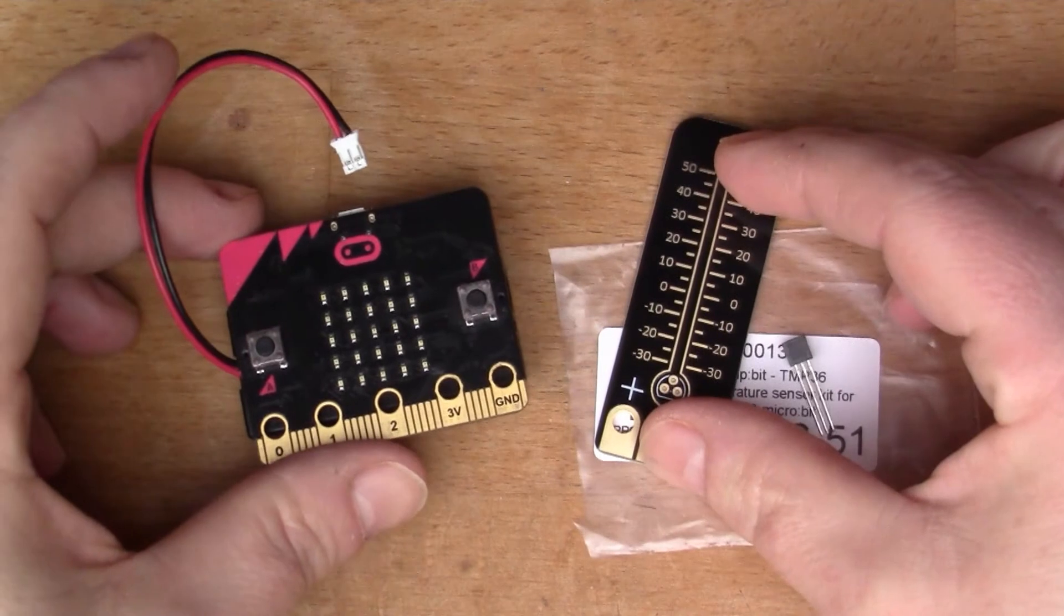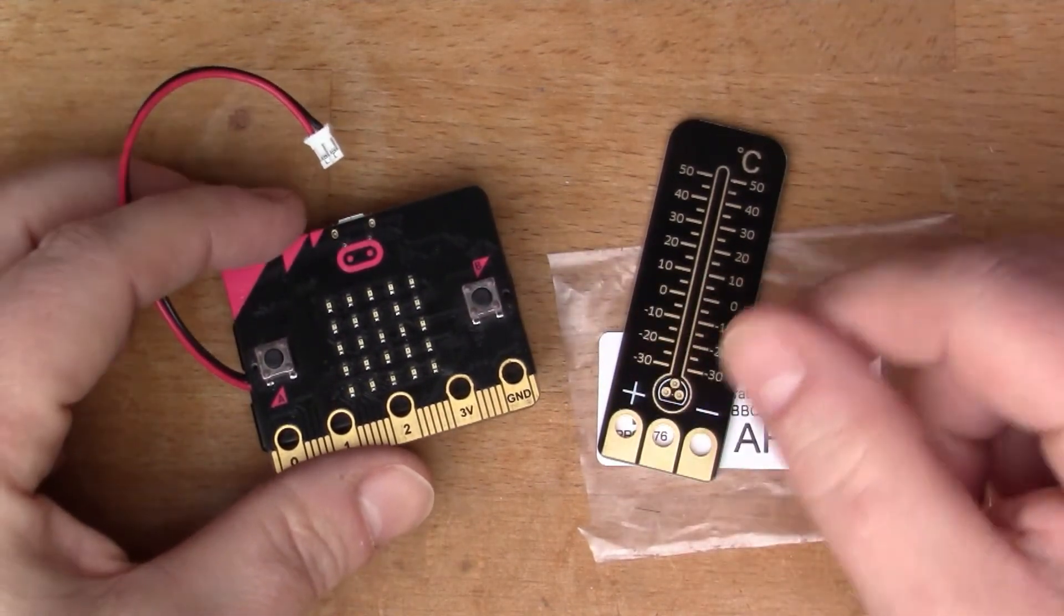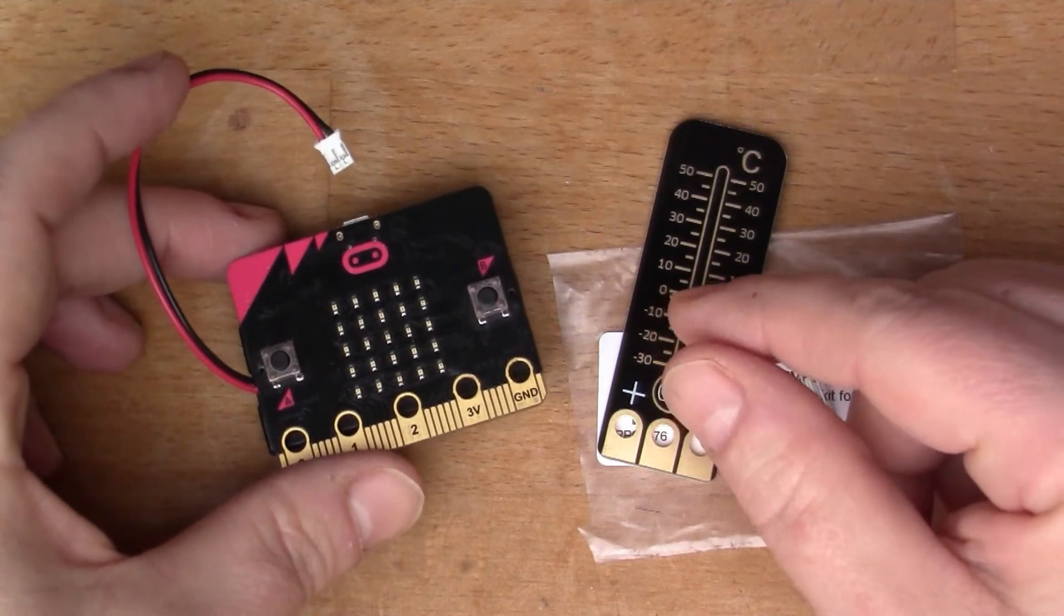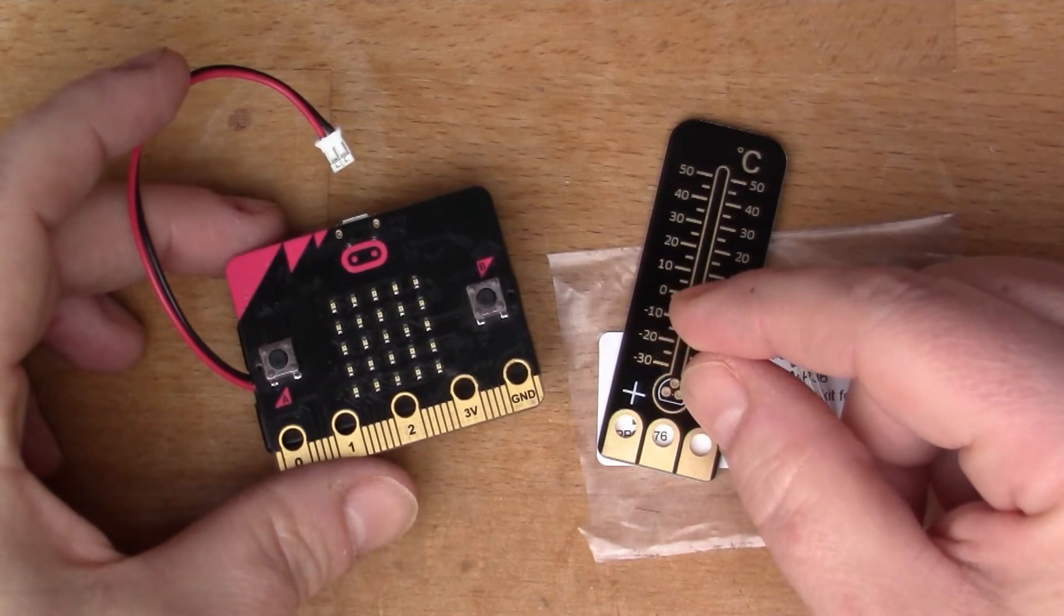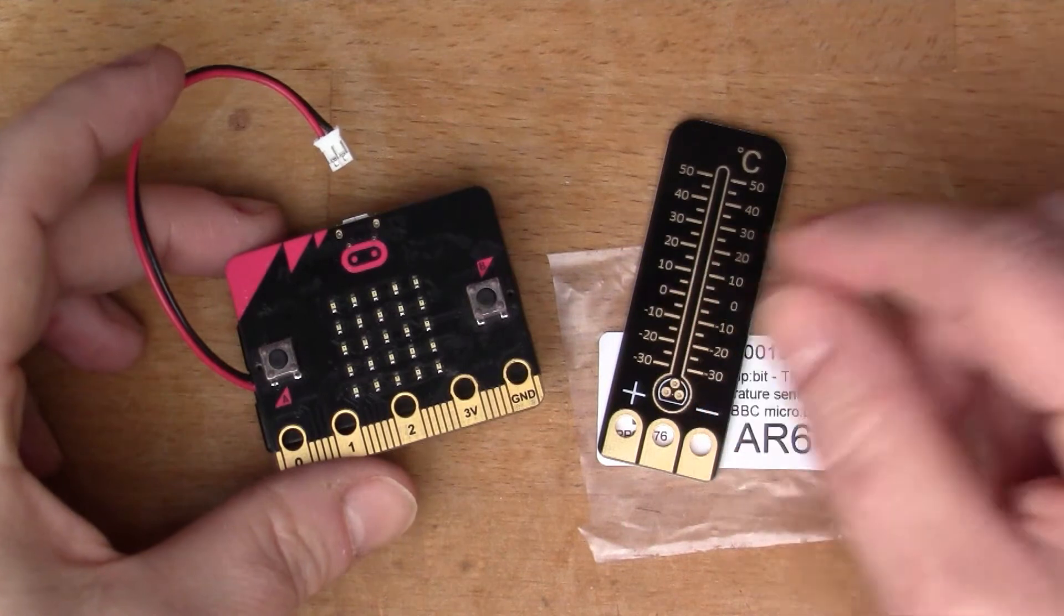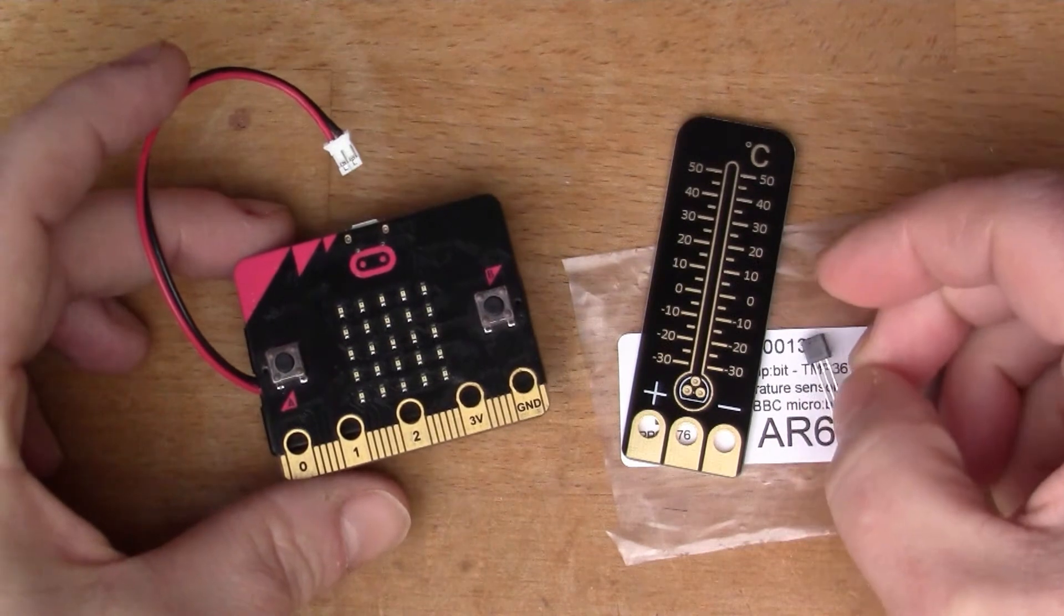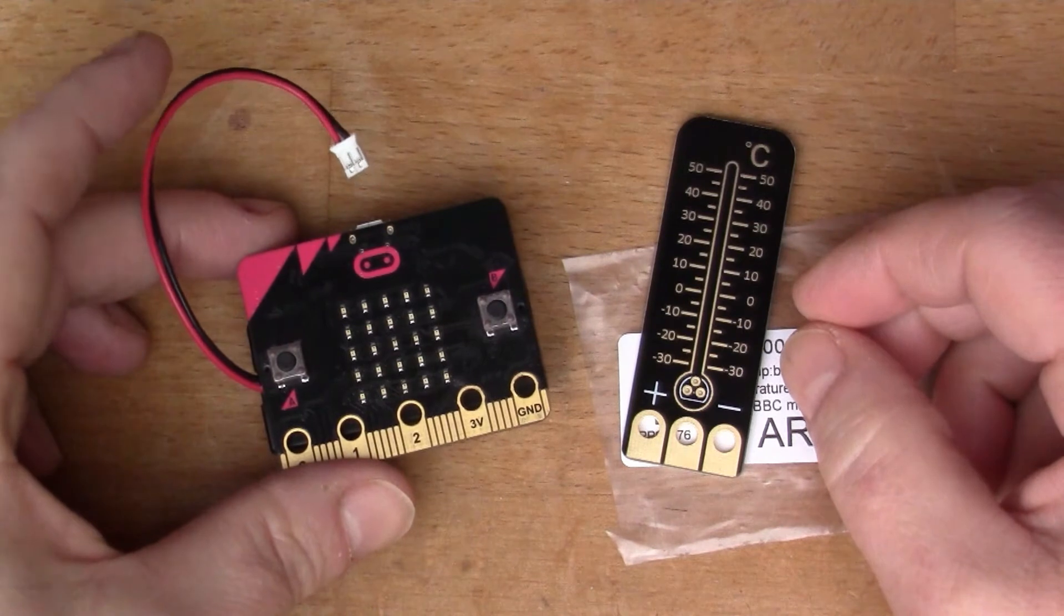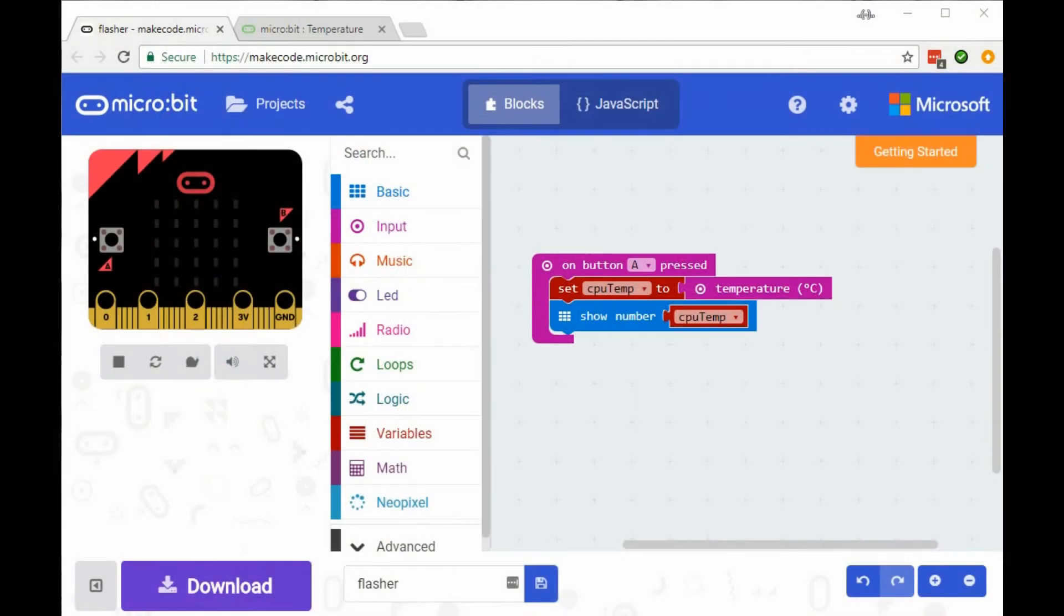If you've programmed the micro:bit before, you might have seen that there is a temperature block and you can read the temperature. So you might think that having this external chip is not really necessary, but let's go and look at that in the make code site and understand what that temperature block is.